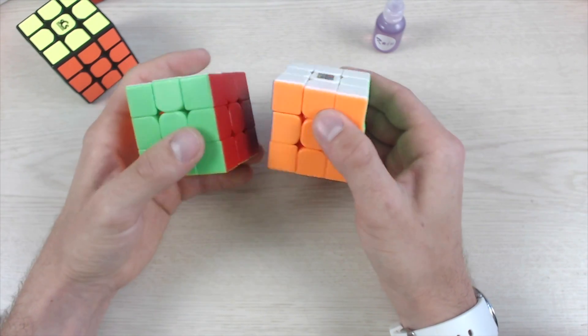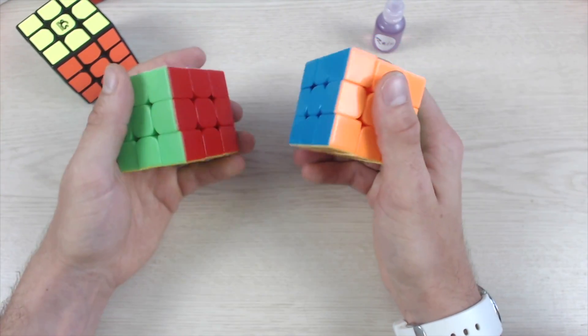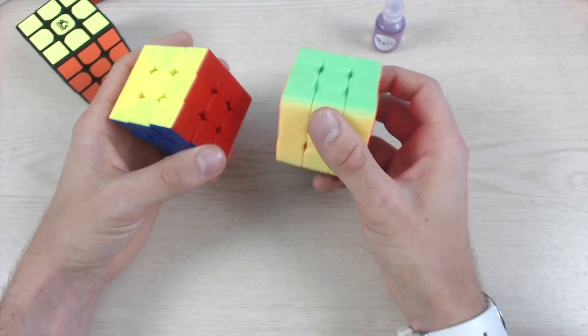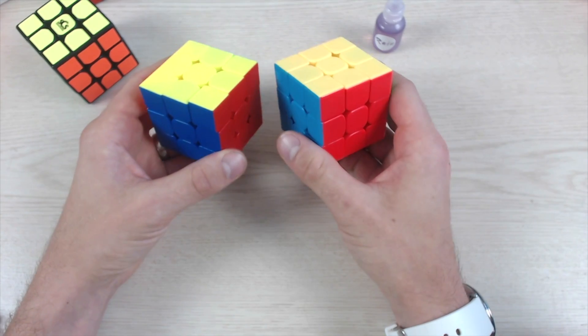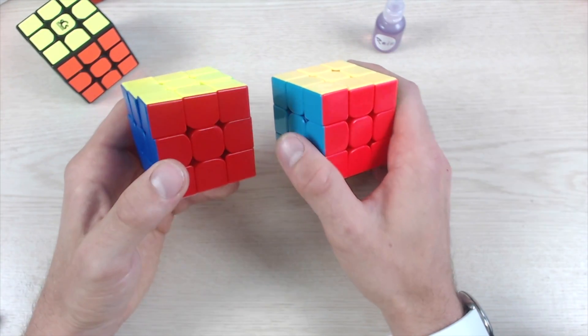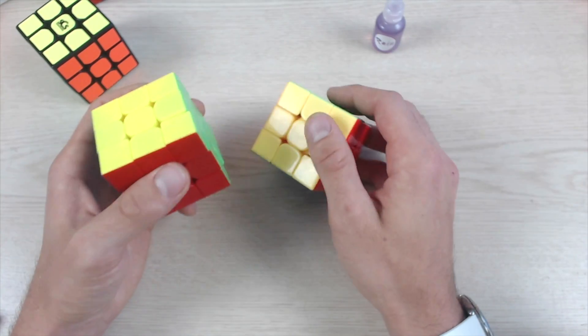But when you talk about someone who's starting out, that fraction of a second is not really that big of a deal. So you might want to go with the feeling of it. As far as shades, too, this is the other big thing. The shades of the RS2 and the Little Magic. The RS2 definitely is a little bit nicer on that end as well.